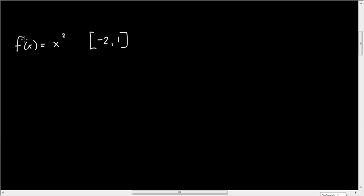So we have the function f(x) is equal to x squared. And now we're going to be looking at the interval [-2, 1]. And so we have to ask ourselves two things. Number one,